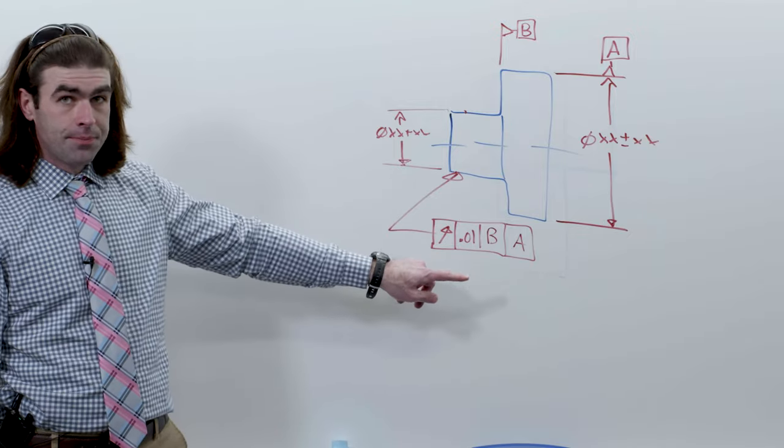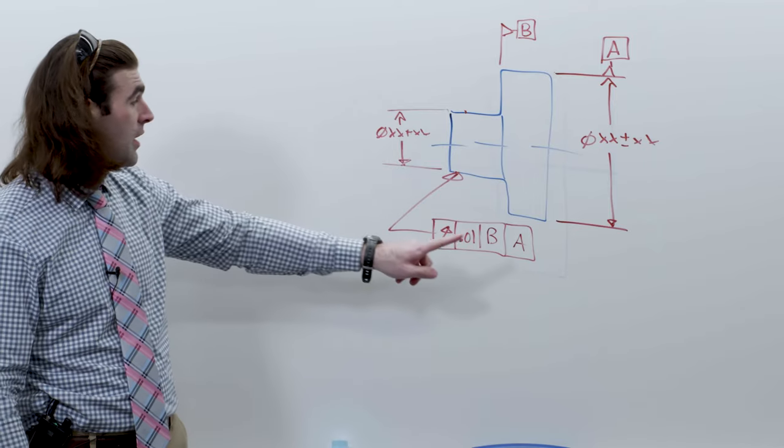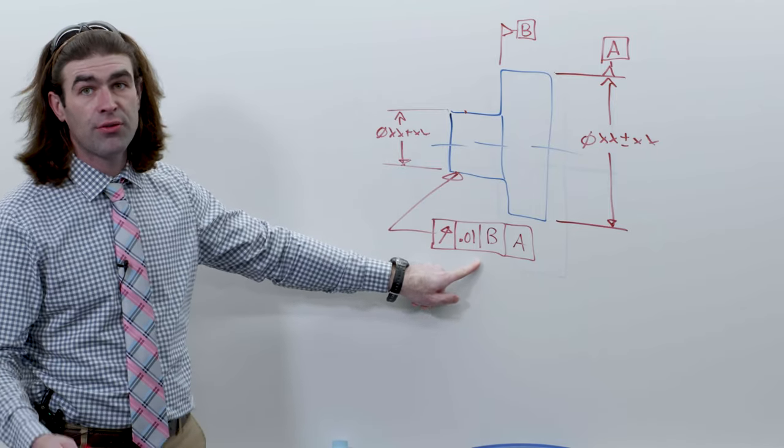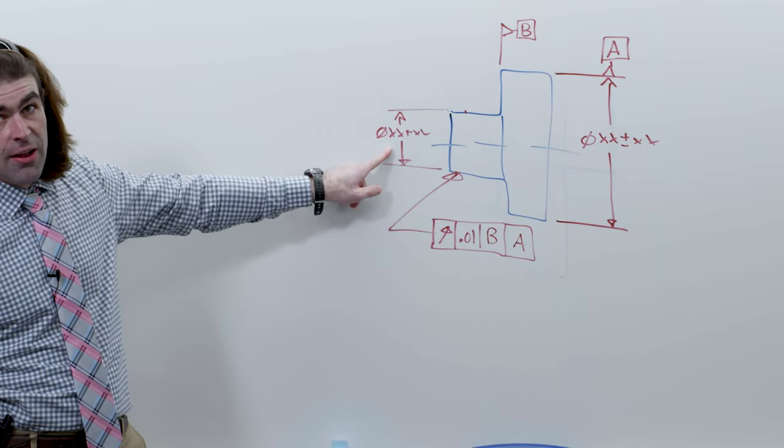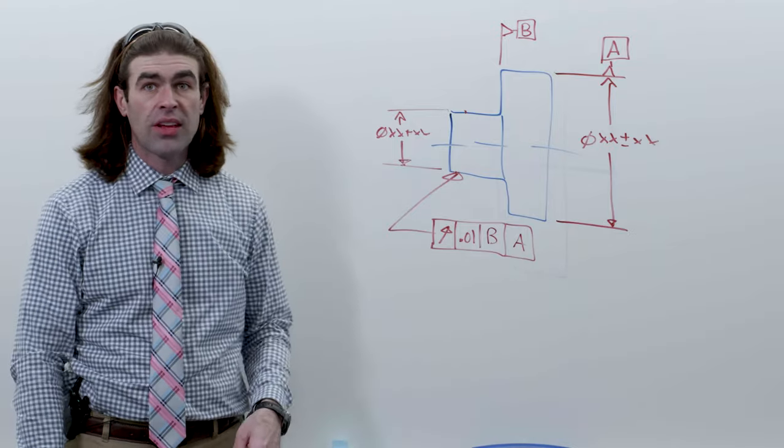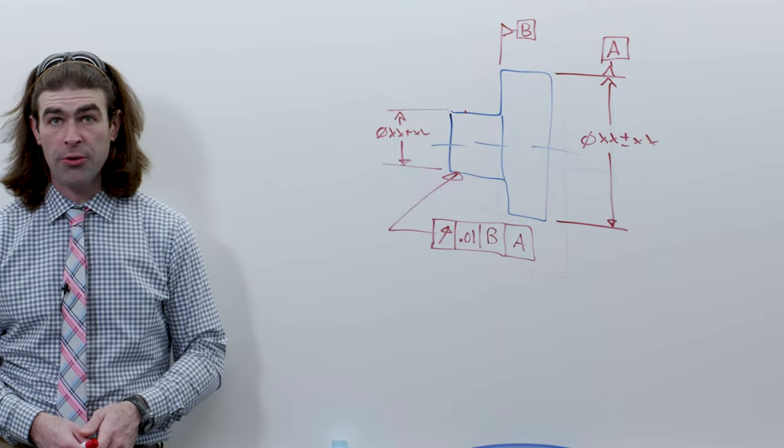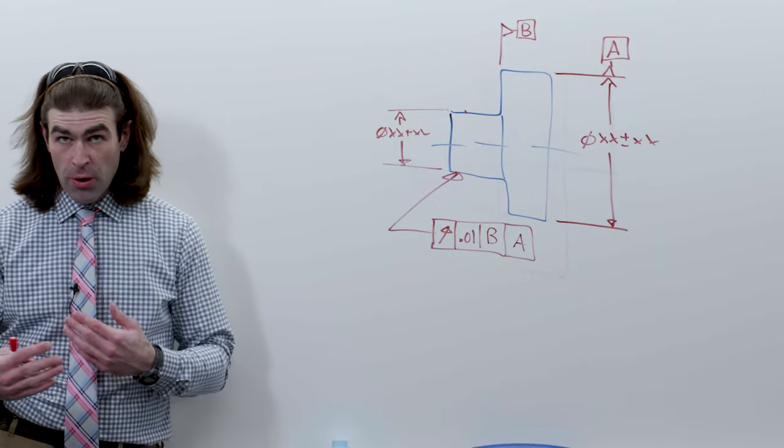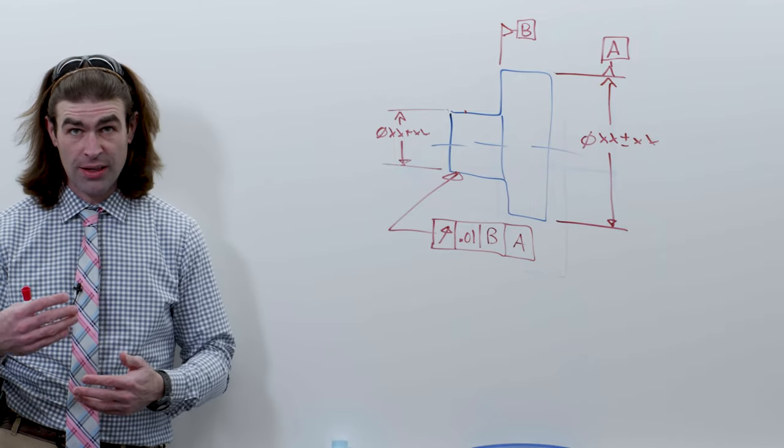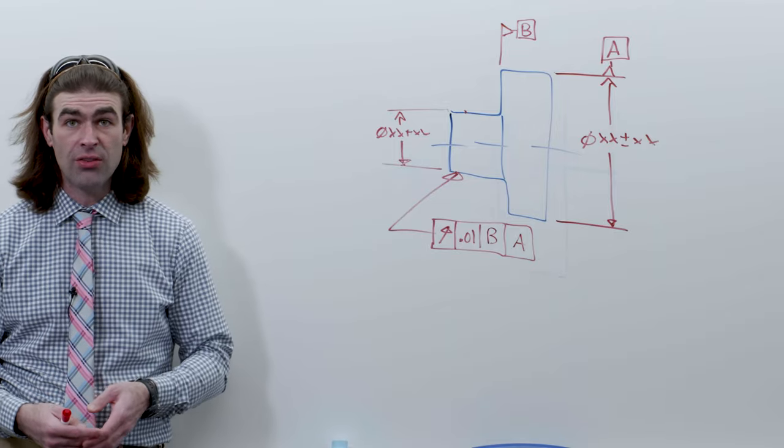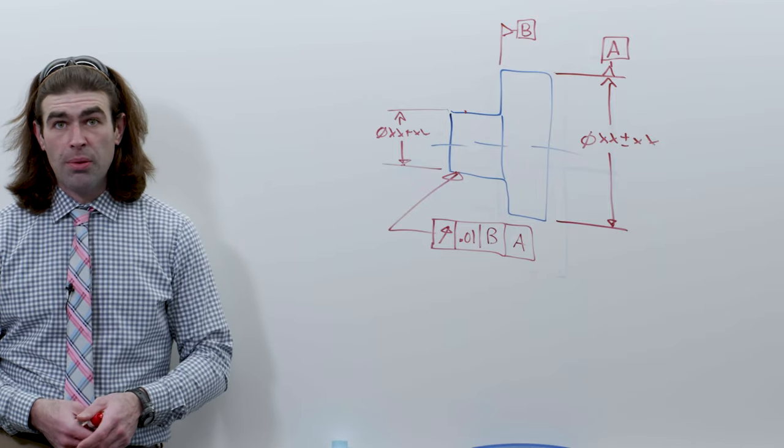The outer boundary for a runout tolerance is the largest size, the MMC, plus the geometric tolerance for an external feature. The inner boundary is in this case the LMC minus the geometric tolerance. So if you're doing a tolerance stackup it's pretty straightforward to figure out what your boundaries are. There's no bonus tolerance with runout tolerances. So I wouldn't apply it to anything with like a clearance application.